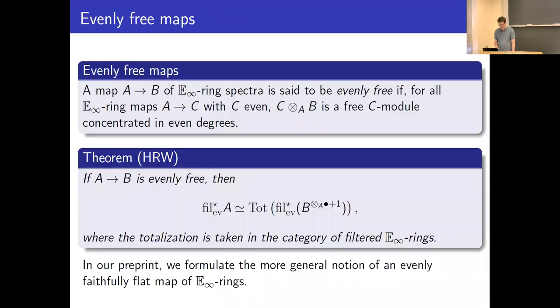But at least in one case it's easy, right? If A is even, then the filtration is just the double-speed Postnikov because there's an initial object, an initial even E-infinity ring that A maps to called A itself. And if you want to formalize this, you have to use this right Kan extension and there's some set theoretic issues, but we'll quickly restrict attention to situations where the set theoretic issues probably aren't real.